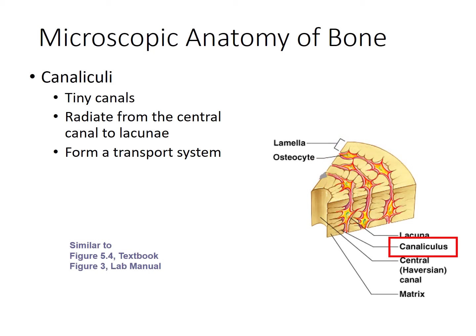Notice that radiating out, first from the central canal and then connecting one lacuna to another, are these small canals called canaliculae — literally 'little canals.' They provide a transport system whereby substances transport between the central canal and the osteocytes, and then between osteocytes.